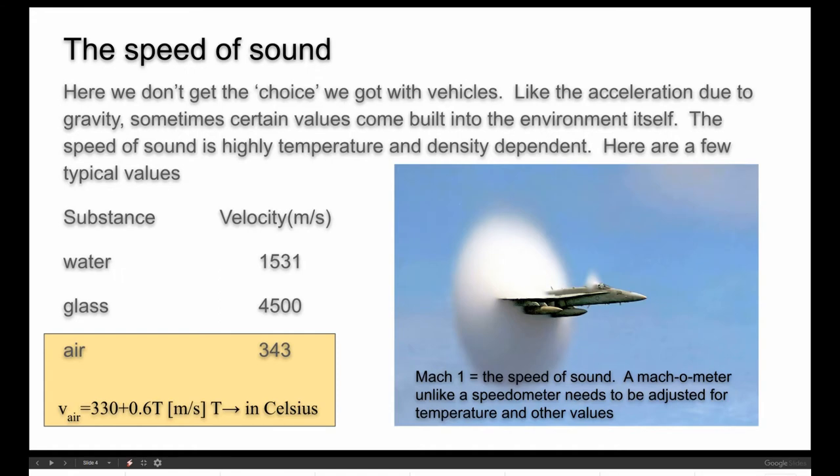Now, when we work with speed, it's usually the speed of sound and here we don't get the choice we got with vehicles. Like the acceleration due to gravity, sometimes certain values come built into the environment. The speed of sound is highly temperature and density dependent in gases. Here are a few typical values we can look at. And for air, it turns out there's a little empirical formula. 330 plus 0.6T with time in Celsius will adjust for air temperature.